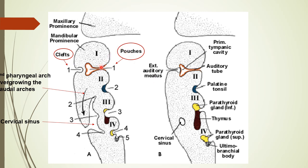Another diagram shows the same: first, second, third, and fourth pouches dividing into their various parts and giving rise to their derivatives. The third and fourth pouches each divide into a dorsal wing and a ventral wing. On the inner side are pouches one, two, three, and four. The ultimobranchial body, sometimes regarded as a rudimentary fifth pouch, is now considered the ventral part of the fourth pouch. The second, third, and fourth clefts are obliterated by the overgrowth of the second pharyngeal arch.